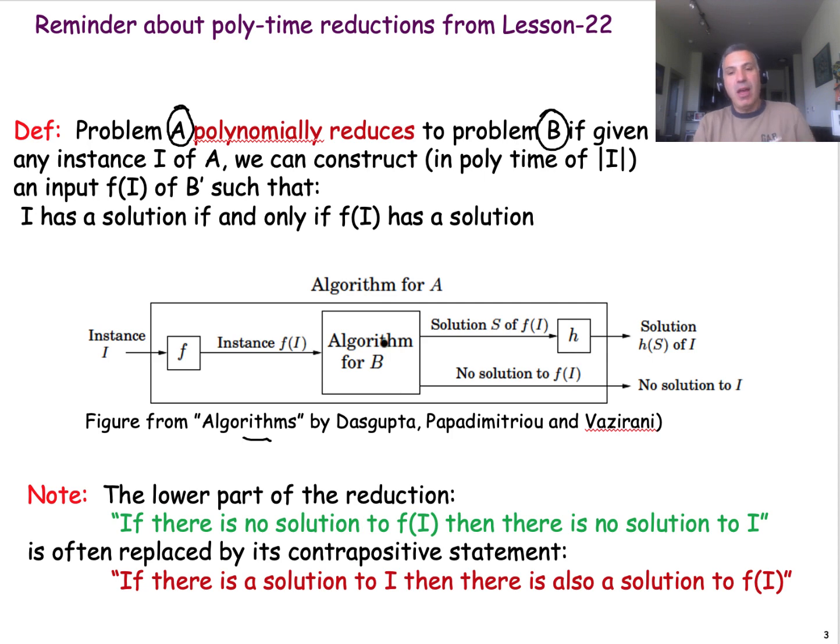So if we are able to reduce problem A to problem B, then we can use any algorithm for solving problem B to solve problem A. How can we do that?